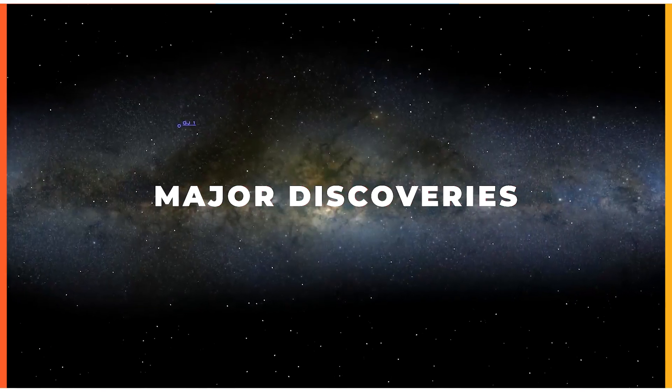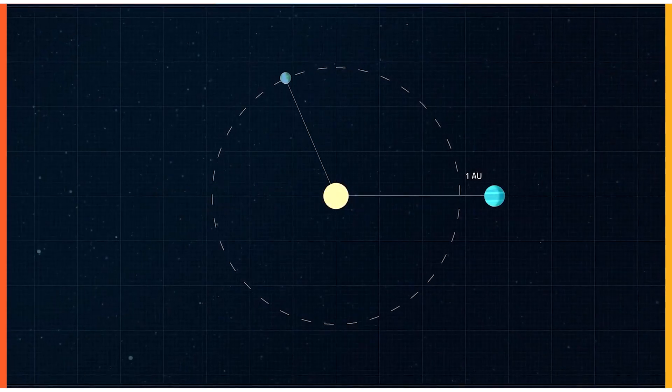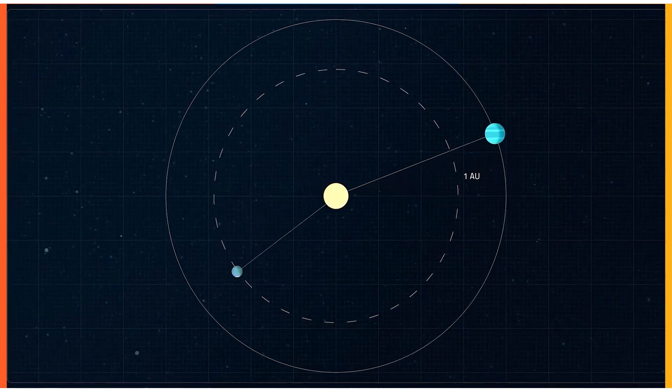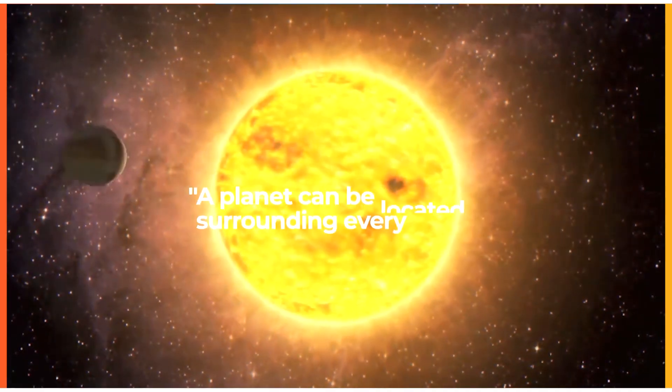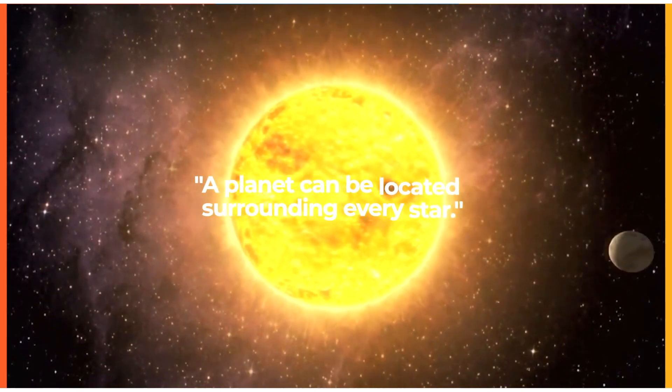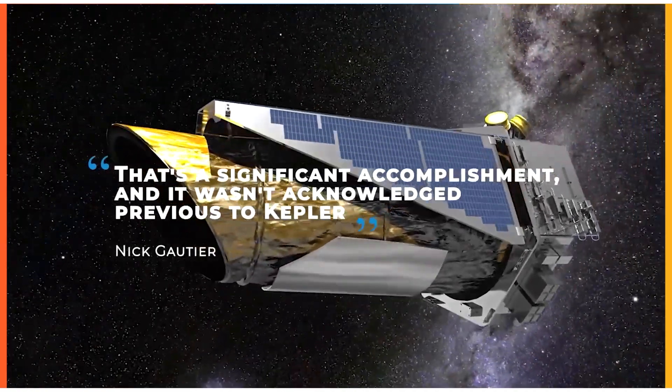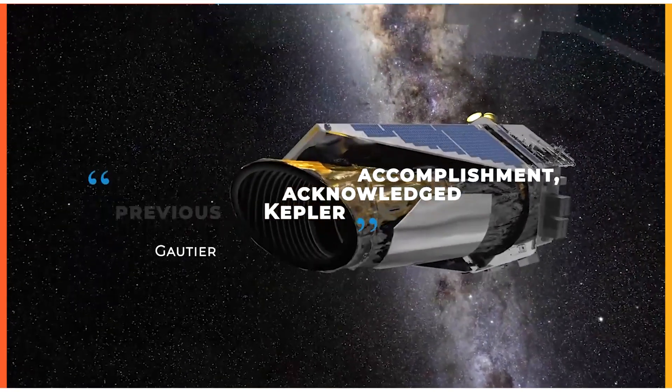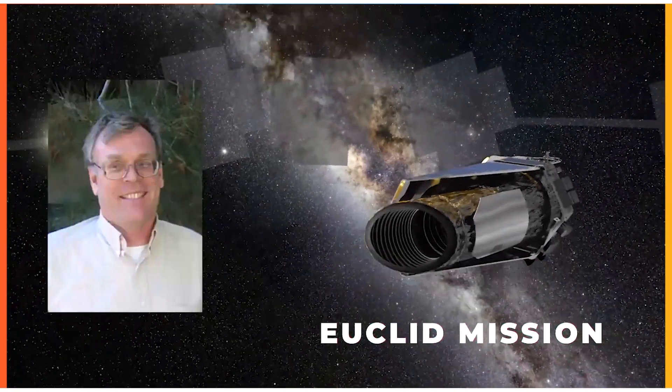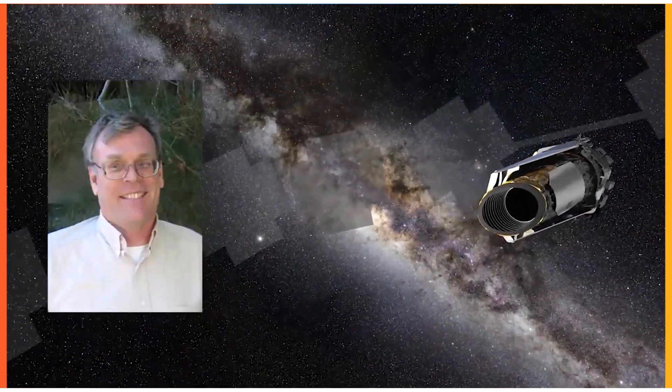Major Discoveries. We now know how often planets are around other stars thanks to Kepler's discovery. A planet can be located surrounding every star. That's a significant accomplishment, and it wasn't acknowledged previous to Kepler, said former Kepler research scientist Nick Gaudier in a brief statement about the telescope's retirement.